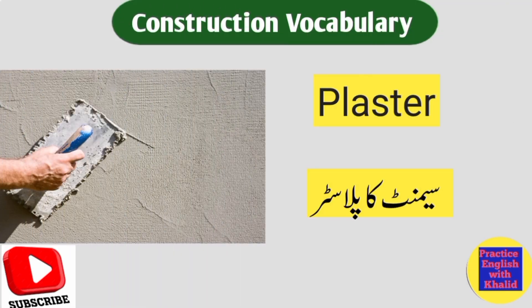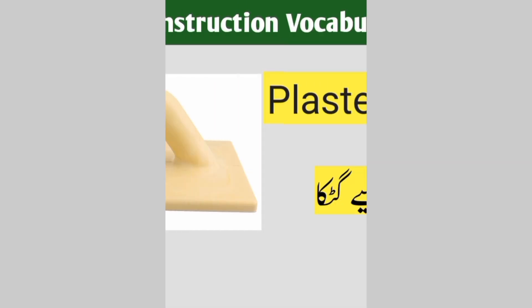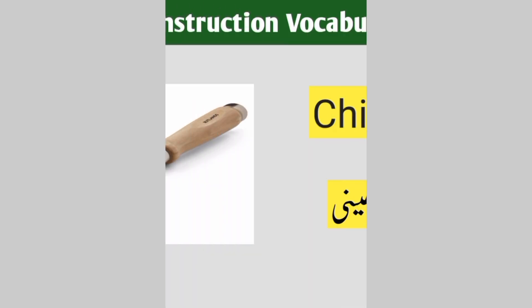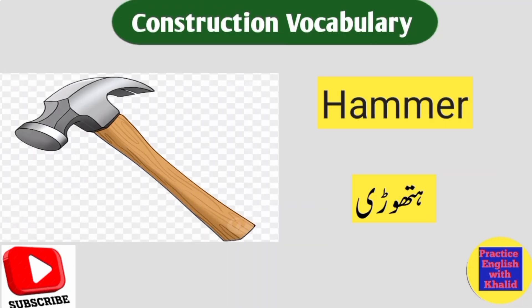Plaster — Cement ka plaster. Trowel — Karni. Plastering float — Plaster ke liye gudka. Chisel — Cheni. Hammer — Pathora.